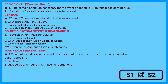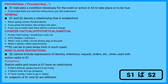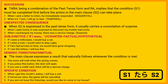Exemptions: stative verbs and nouns in S1 have no restrictions — if that's difficult, please hand it in by Friday; if there's time, let's go shopping; if I have money, I want to go to Japan. Or when subjects of S1 and S2 are different — if he goes, I'll go too. As you can see, among the conditionals, it is tara that has the widest usage, unlike to and ba which have many restrictions. One should not worry too much when using this form. Now let's move on to the next topic.